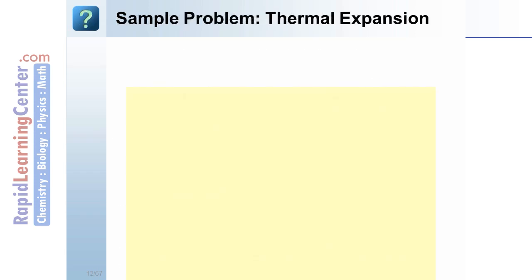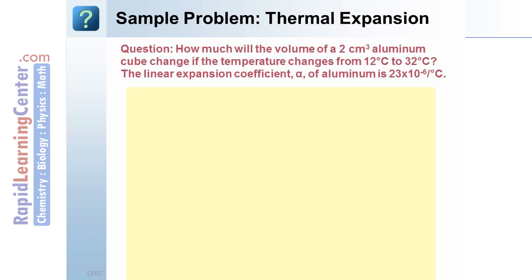Sample problem. Thermal expansion. How much will the volume of a 2 cubic centimeter aluminum cube change if the temperature changes from 12 degrees Celsius to 32 degrees Celsius? The linear expansion coefficient, alpha, of aluminum is 23 times 10 to the negative 6th per degree Celsius.